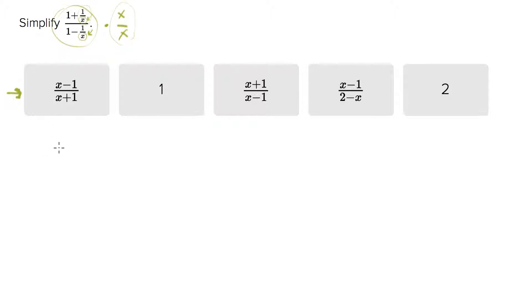So let's multiply through and see what happens. The numerator will end up with x plus x over x, and the denominator, when we multiply x, we'll end up with x minus x over x, which simplifies to x plus 1 over x minus 1.